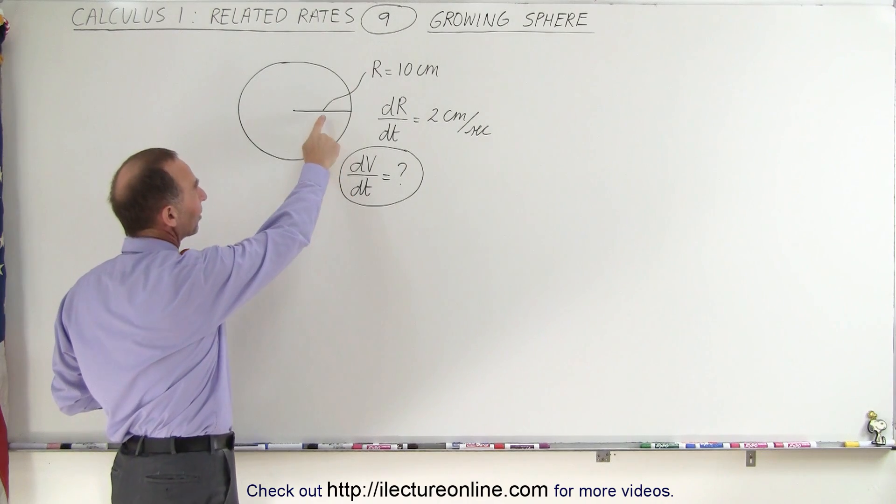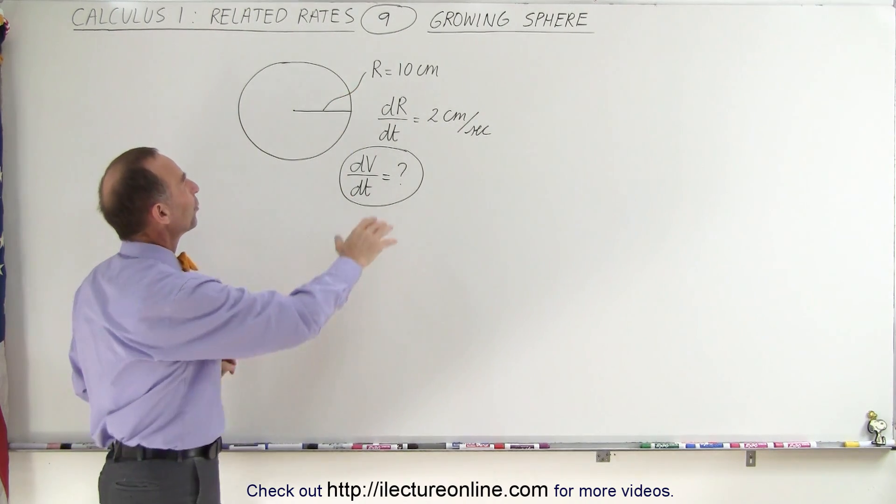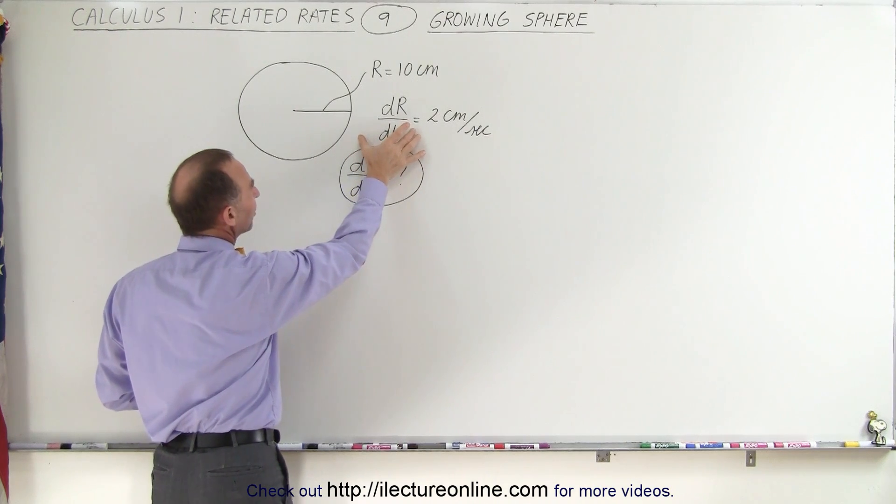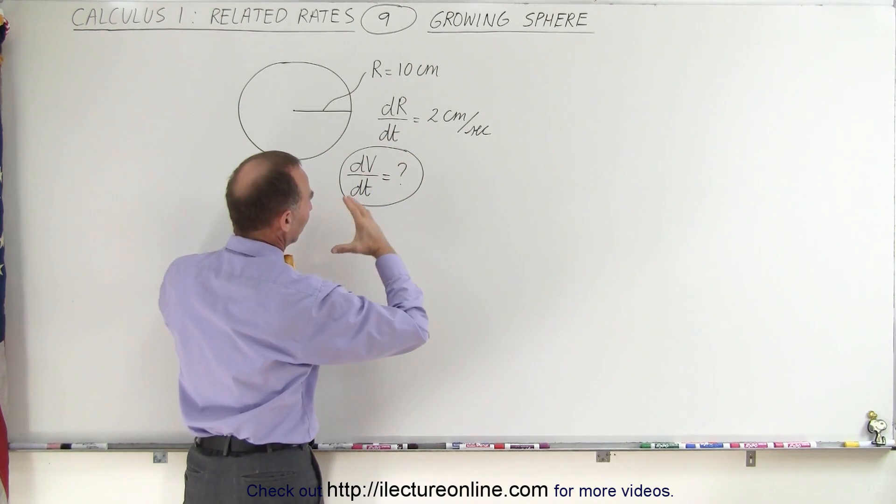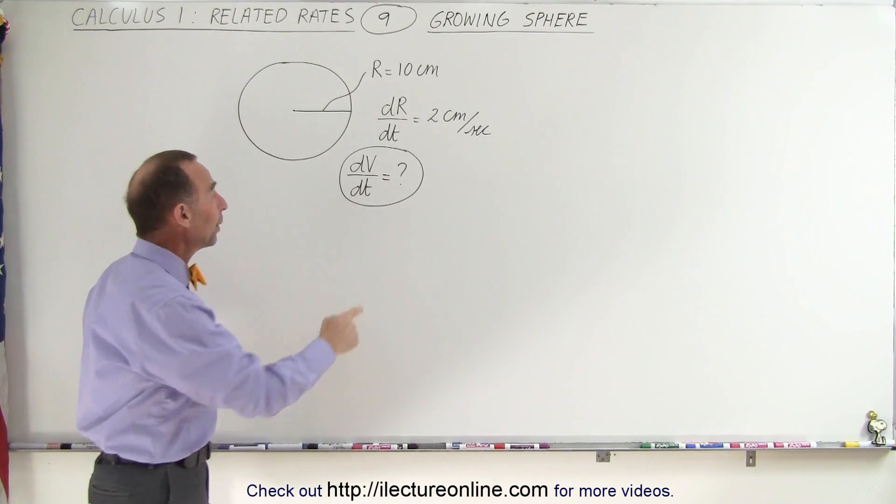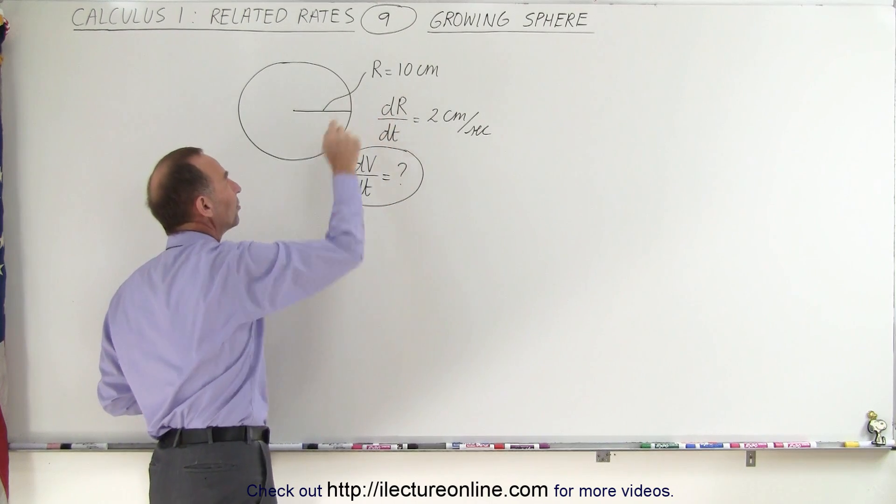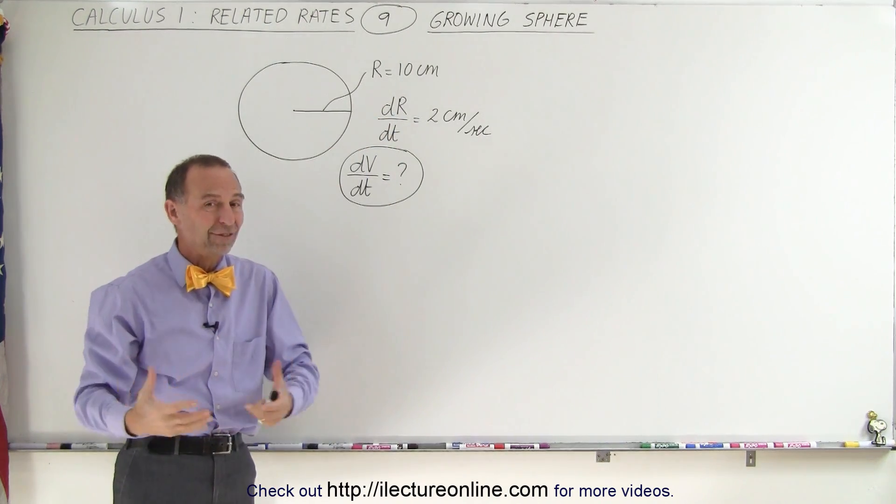What we know here is that the radius at this moment is 10 centimeters, that's of course not the galaxy, and the rate of change of the radius is 2 centimeters per second, so the radius is becoming larger. And we're trying to find the rate of change of the volume per unit time at the moment that the radius is 10 centimeters. So this really applies to any sphere.